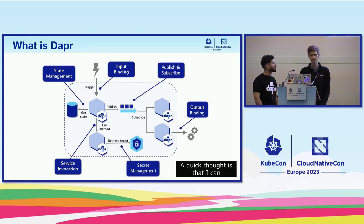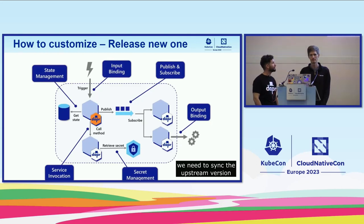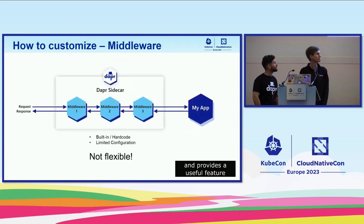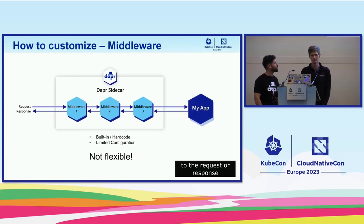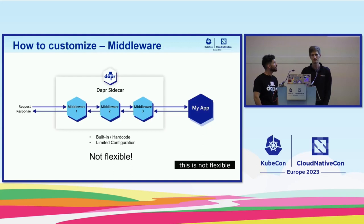This security check is not published and I cannot upstream it, and I do not want to rewrite this logic in every application. So how can I do this in Dapr? A first thought is to release a new Dapr build, but this is very hard since Dapr has many repos and we need to sync with upstream — it's a big job. Dapr does provide a useful feature: middleware. The middleware supports doing some changes on a request or response. But this is built-in, which means it's hard-coded with limited configuration. Users cannot add their own middleware that is not public. This is not flexible. So how to do this flexibly? We can use WebAssembly.